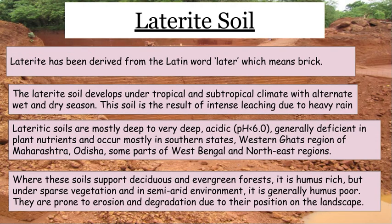Next is laterite soil. Laterite comes from the Latin word 'later' meaning brick. It is found in tropical and subtropical climates with alternate wet and dry seasons. This soil is the result of intense leaching due to heavy rainfall in an acidic medium. It is mostly found in southern states, the western Ghats, and some parts of West Bengal.